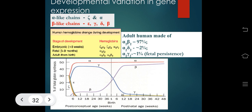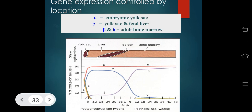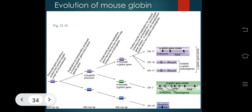Adult human hemoglobin is composed of alpha-2 beta-2 (97%) and alpha-2 delta-2 (~2%). Embryonic, fetal, and adult gene expression is controlled by location — alpha-type chains are produced in the yolk sac, fetal liver, and adult bone marrow respectively. Evolution of mouse globin: a primordial gene encoding an oxygen-carrying protein underwent duplication by transposition to produce a muscle-specific gene (myoglobin) and a blood-specific gene. A large-scale genome duplication gave rise to two modern hemoglobin components, and subsequent rounds of unequal crossing over produced alpha and beta globin gene clusters plus two alpha globin pseudogenes.